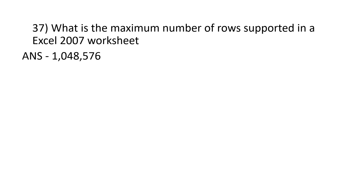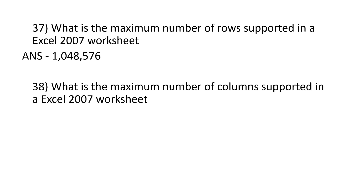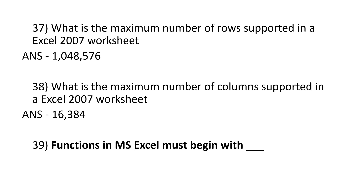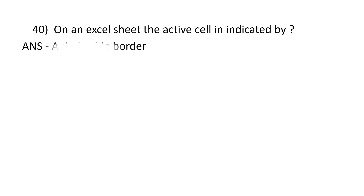What is the maximum number of rows supported in Excel 2007 worksheet? 10,48,576. What is the maximum number of columns supported in Excel 2007 worksheet? 16,384. Functions in MS Excel must begin with an equal sign. On an Excel sheet, the active cell is indicated by a dark wide border.